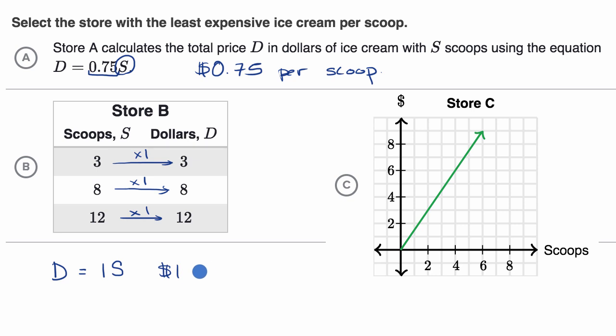So one dollar, one dollar per scoop. So we already know that store A is cheaper than store B, because 75 cents per scoop is cheaper than one dollar per scoop.